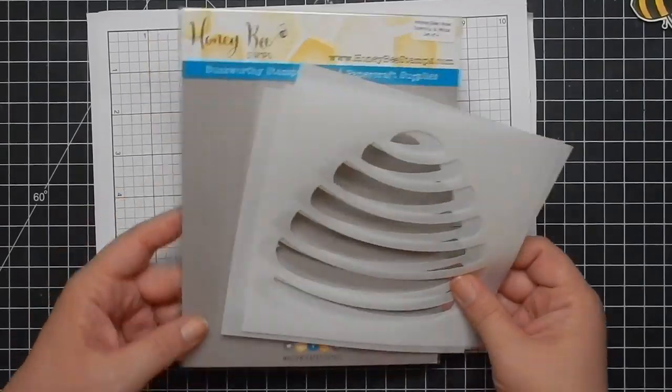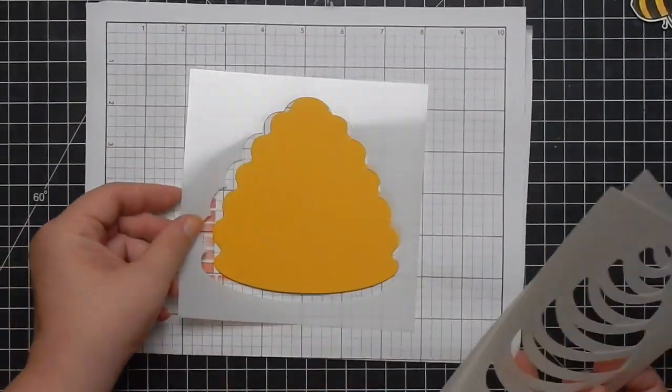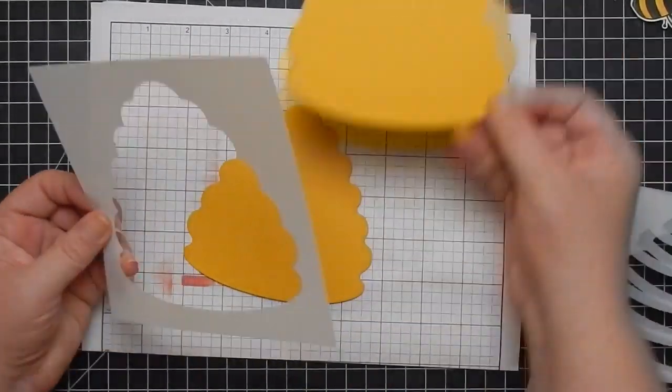I'll have those linked below as well. Here I'm just showing you how the card would go together. Before I forget, this is the Honeybee Hive stencils and mask - it's a set of four.